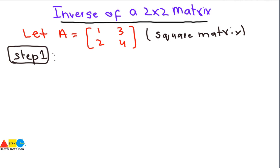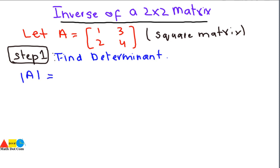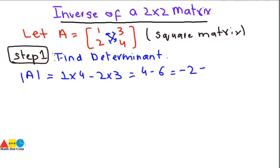The inverse is only possible for a non-singular matrix. We have already seen in our previous lecture what is meant by singular and non-singular matrix. So first we will find the determinant in order to determine whether the given matrix is singular or not. Step 1: find the determinant of A. The determinant equals 1 multiplied by 4 minus 2 multiplied by 3, which is 4 minus 6, giving minus 2. Since minus 2 is not equal to 0, this is a non-singular matrix and its inverse is possible.